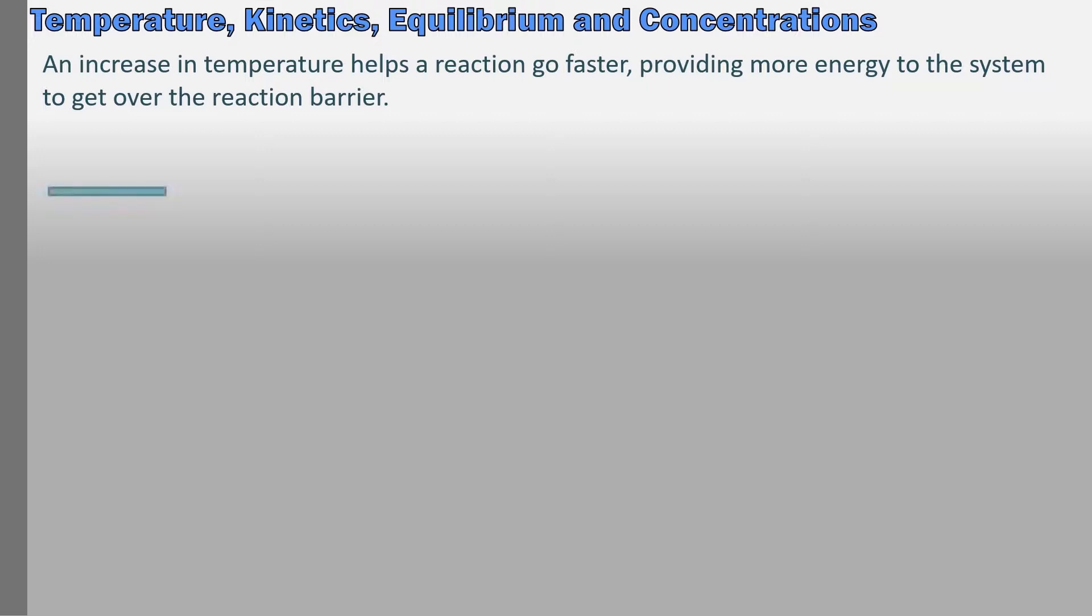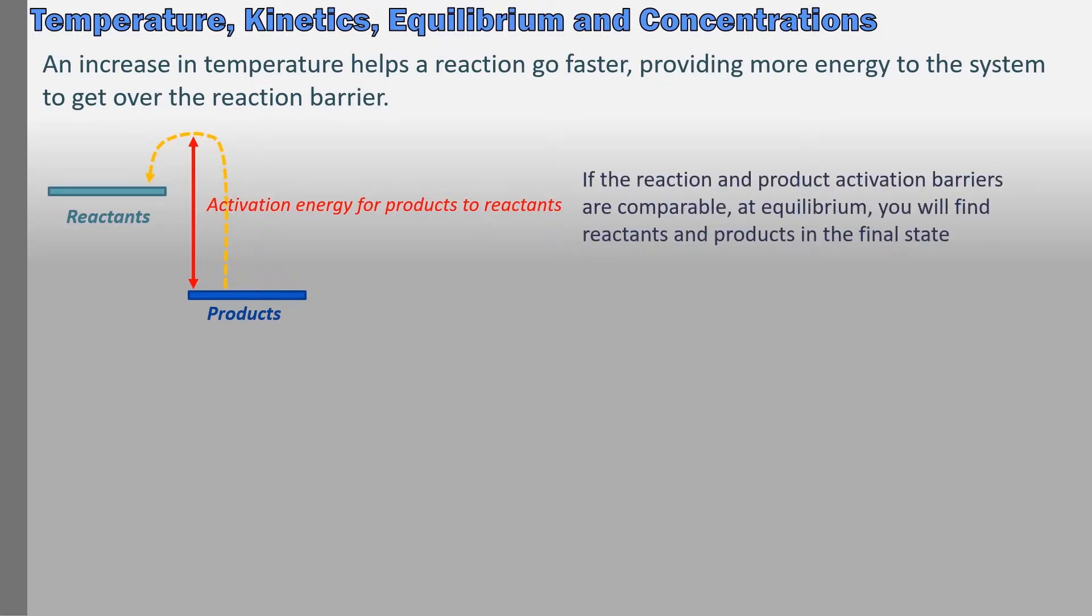When reactants run over the activation barrier to form products, we have to consider that the products that form could return over the energy barrier to reform the reactants. And just as in the forward process, the back reaction rate will depend on how high the barrier will be. If the reaction and product activation barriers are somewhat comparable, at equilibrium, you would probably find considerable amounts of both reactants and products in the final state.